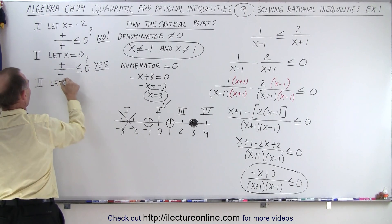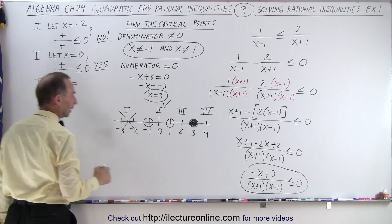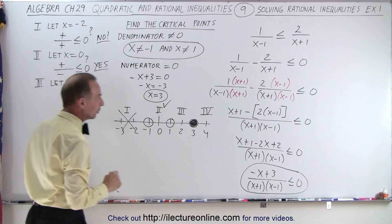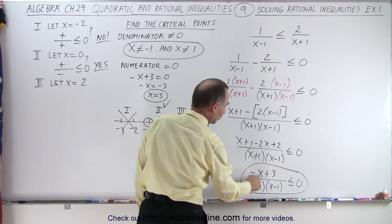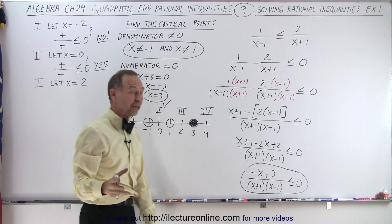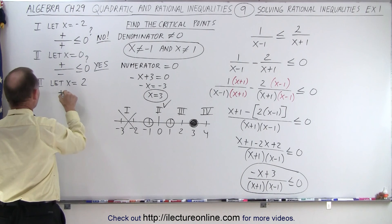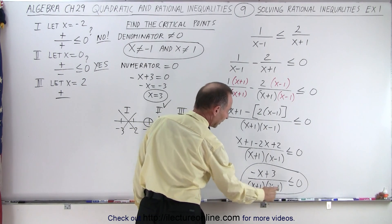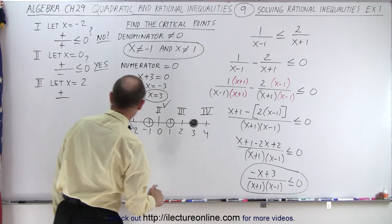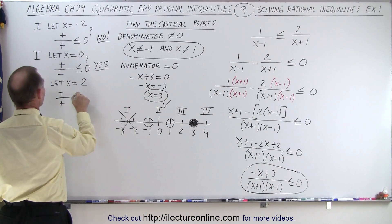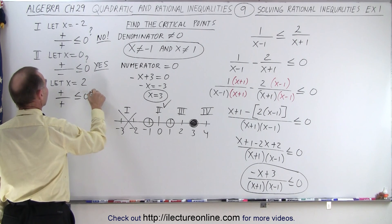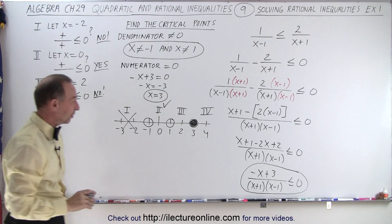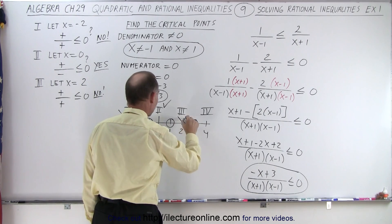For region three, let x equal two. The numerator gives negative two plus three, which is still positive. In the denominator, two plus one is positive and two minus one is positive; positive times positive is positive. Is that less than or equal to zero? No — a positive number cannot be less than zero, so this region is not included.